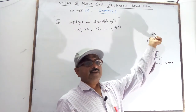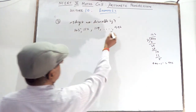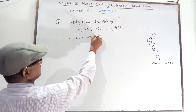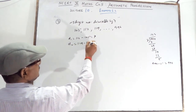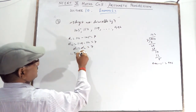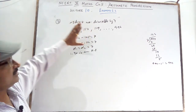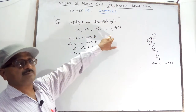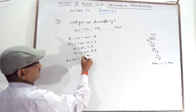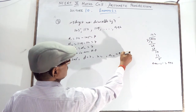Now confirm the common difference: 112 minus 105 equals 7, 119 minus 112 equals 7, so D equals 7. Because it is a table of 7, the numbers form an AP with A equal to 105, D equal to 7, and An equal to 994. N is unknown.